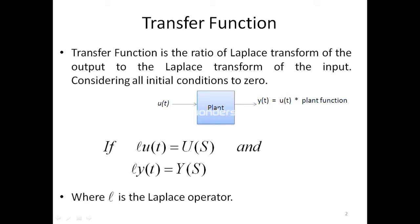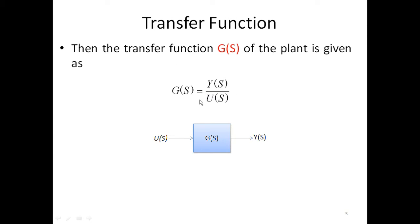The definition of transfer function is the ratio of the Laplace transform of the output to the Laplace transform of the input, considering all initial conditions to be zero. As per the definition, the Laplace transform of input is capital U(s) and Laplace transform of output is capital Y(s). So transfer function G(s) is equal to Y(s) upon U(s) — the ratio of Laplace transform of output to Laplace transform of input.